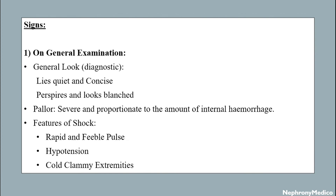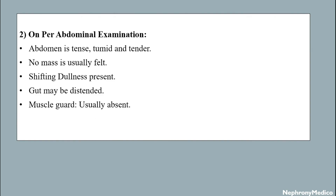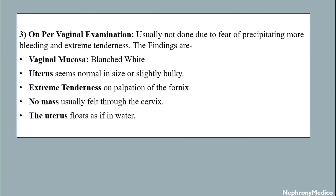Signs on general examination: the patient looks pale and blanched with features of shock like rapid and feeble pulse, hypotension, and cold clammy extremities. On per abdominal examination, the abdomen is tense, rigid, and tender; no mass is usually felt; shifting dullness is present; gut may be distended; and muscle guarding is usually absent. On per vaginal examination, the vaginal mucosa is pale white, uterus seems normal in size or slightly bulky, extreme tenderness on palpation of the fornices, no mass usually felt, and the uterus floats as if in water.